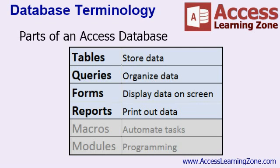Tables are used to store data, queries to organize data, forms to display data on the screen and to edit that data, reports for printing out data, and optionally for more advanced users, macros are used to automate tasks, and modules give you the full Visual Basic programming language inside of your Access database. Macros and modules are grayed out because you can build a fantastic database in Microsoft Access without ever using a macro or a module.